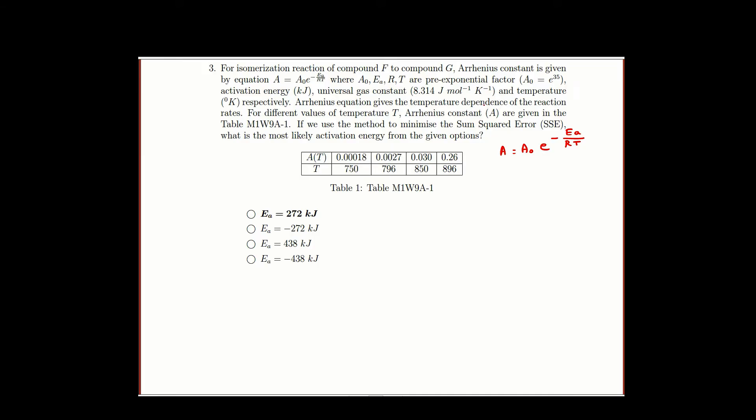The Arrhenius equation gives the temperature dependence of the reaction rates. For different values of temperature T, Arrhenius constant A are given in the table. So for different T, this T and AT are given.